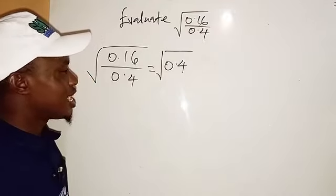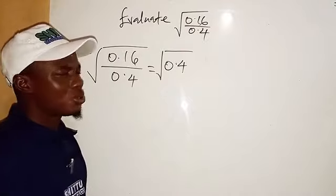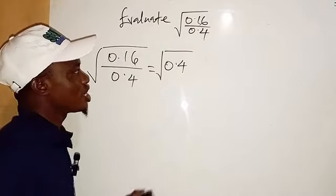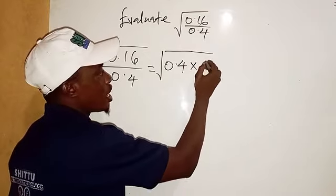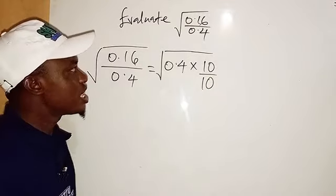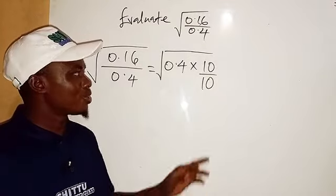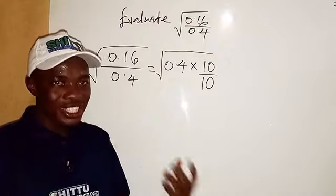We don't want to use a calculator to get this. There's something I would like to do here: if I multiply this 0.4 by 10, then divide by 10, you can see that it doesn't change anything because 10 divided by 10 will still give me 1, and 1 multiplied by 0.4 is simply 0.4.